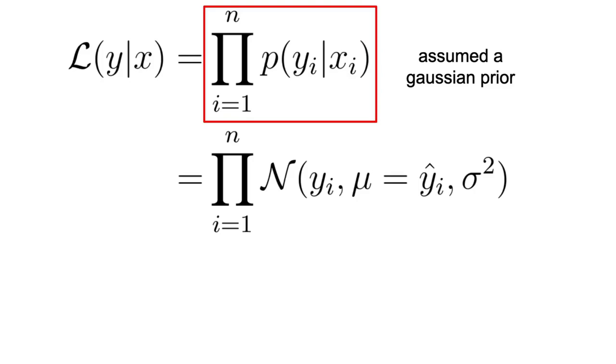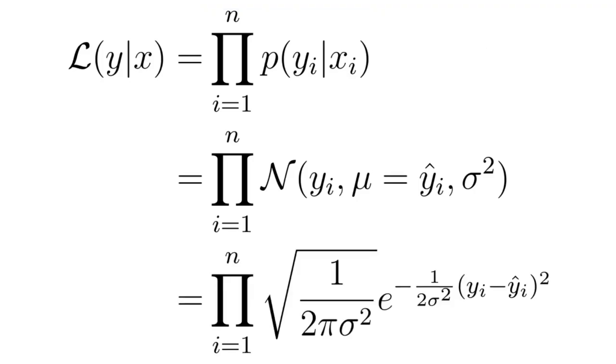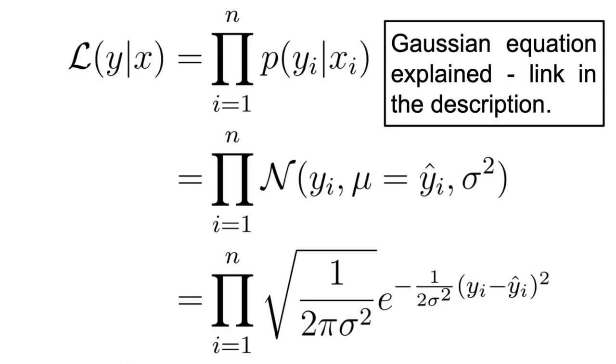If we were to express this in mathematical terms, we would have that the maximum likelihood estimation is equal to the product of each individual distribution. And if we were to expand further, we would obtain this. If this looks too complicated to you, trust me, it isn't. All I've done was to use the normal distribution equation. If you want to see where this equation derives from, I've got you covered, and you can find a link in the description.